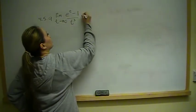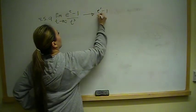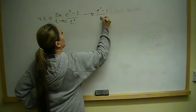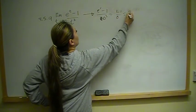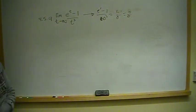Well, e to the 0 is 1, 0 cubed, so we have 1 minus 1 over 0, which equals 0 over 0. So that tells us L'Hopital's rule applies.